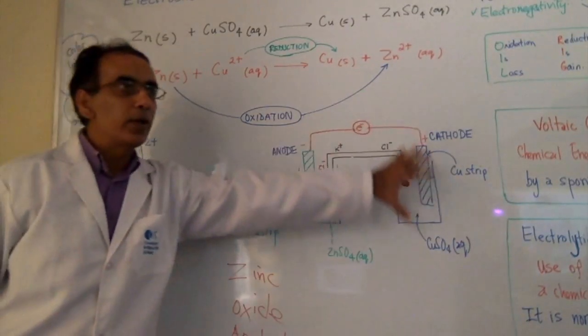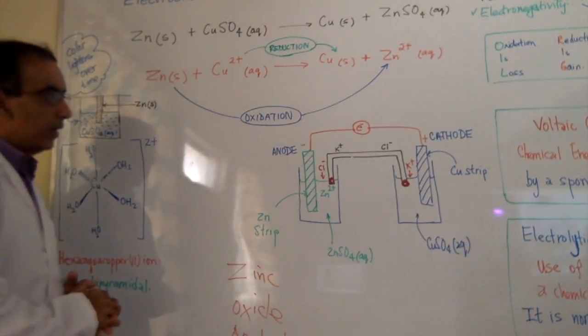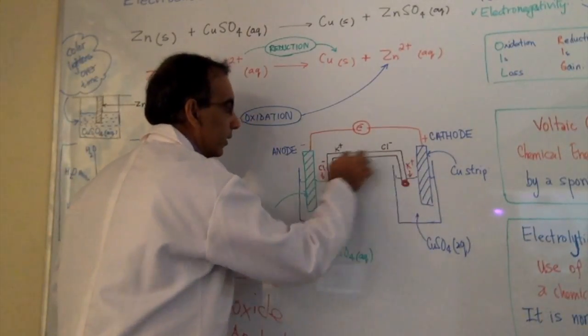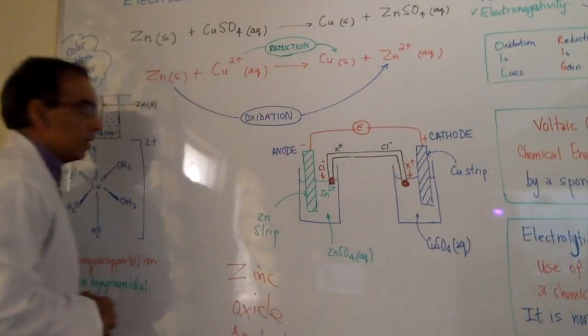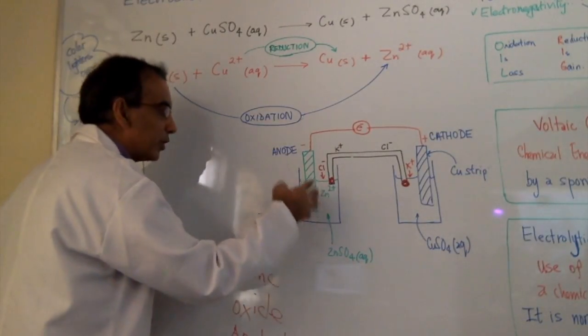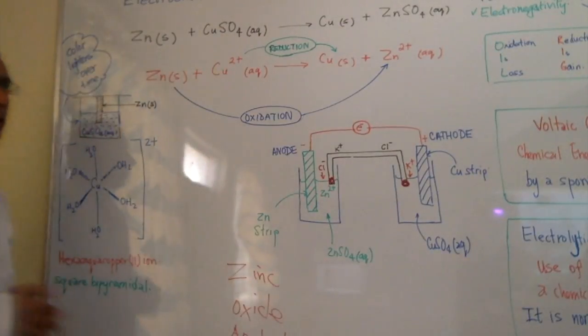But this cell would not continue to work for very long unless we created a bridge here going across. Because once you have a lot of these Zn2+ ions on this side, the tendency for them to continue to be formed would drop in time.